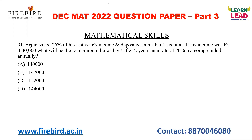Arjun saved 25% of his last year's income and deposited it in his bank account. If his income was Rs. 4 lakhs, what is 25% of 4 lakhs? It is nothing but 1 lakh. What will be the total amount he will get after two years at a rate of 20% per annum compounded annually? If it is 20% per annum, compounded annually, then for two years you have to calculate.